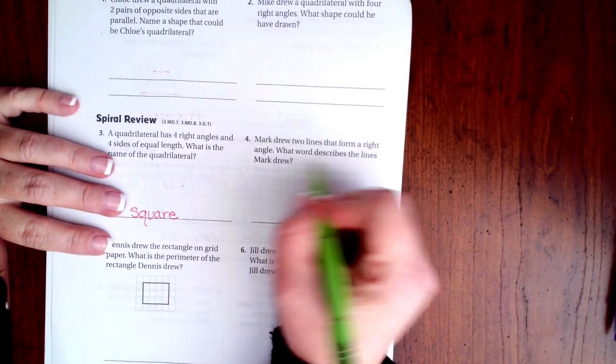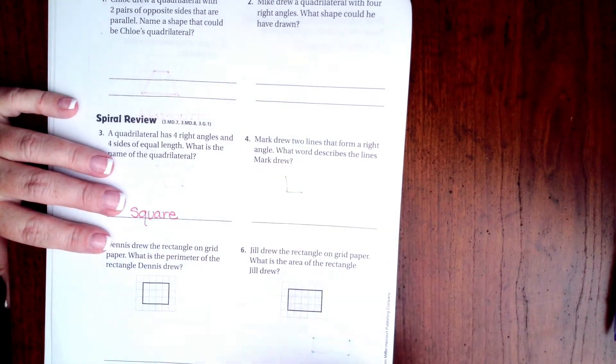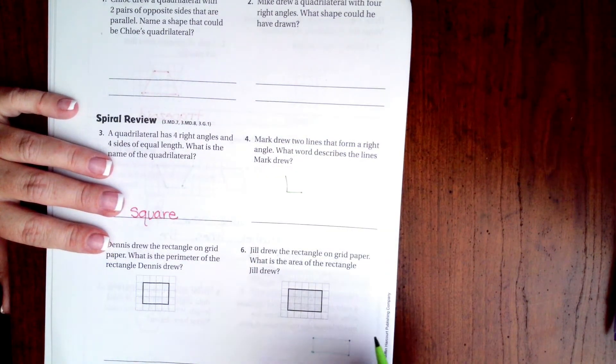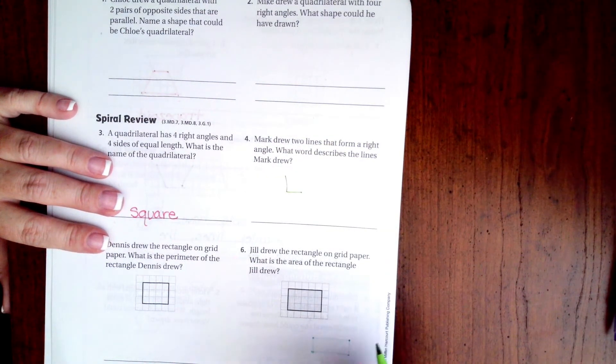Mark drew two lines that form a right angle. What word describes the lines that Mark drew? Well those are perpendicular.